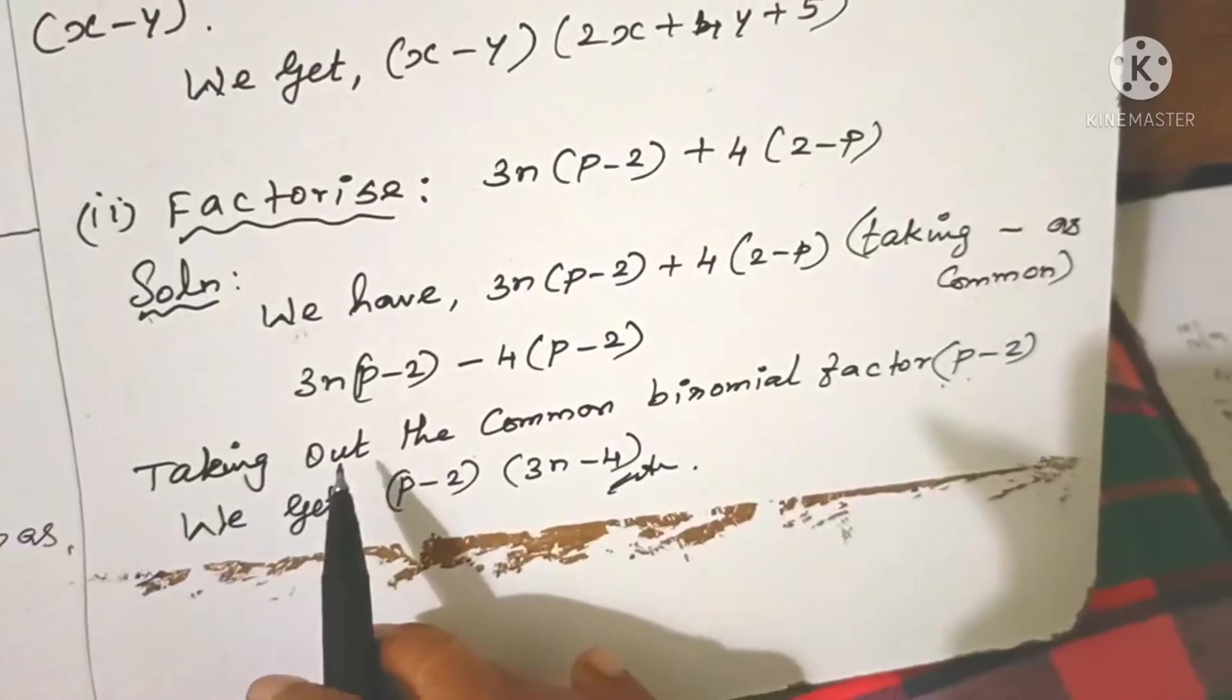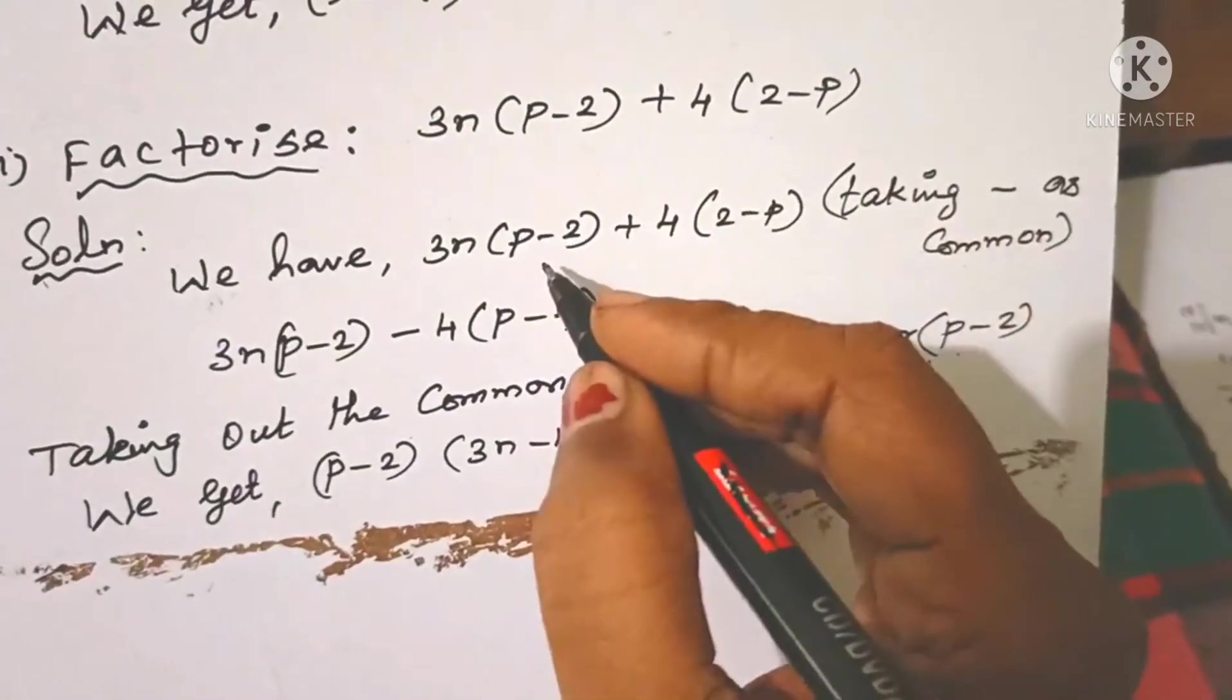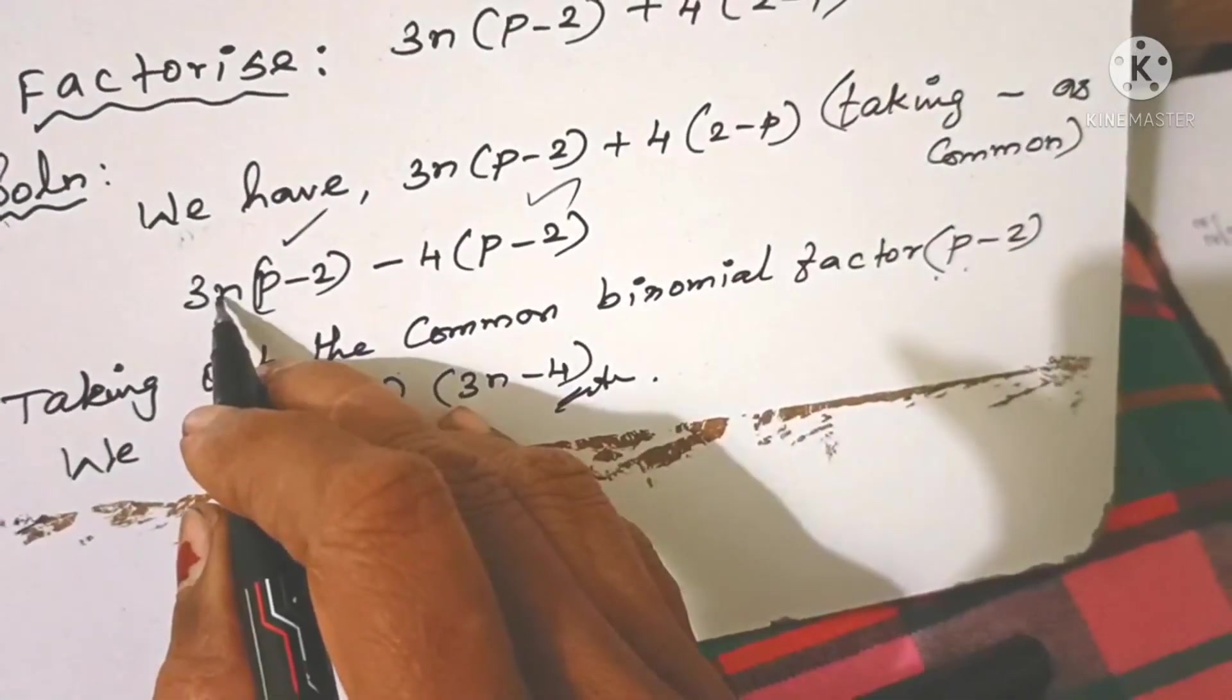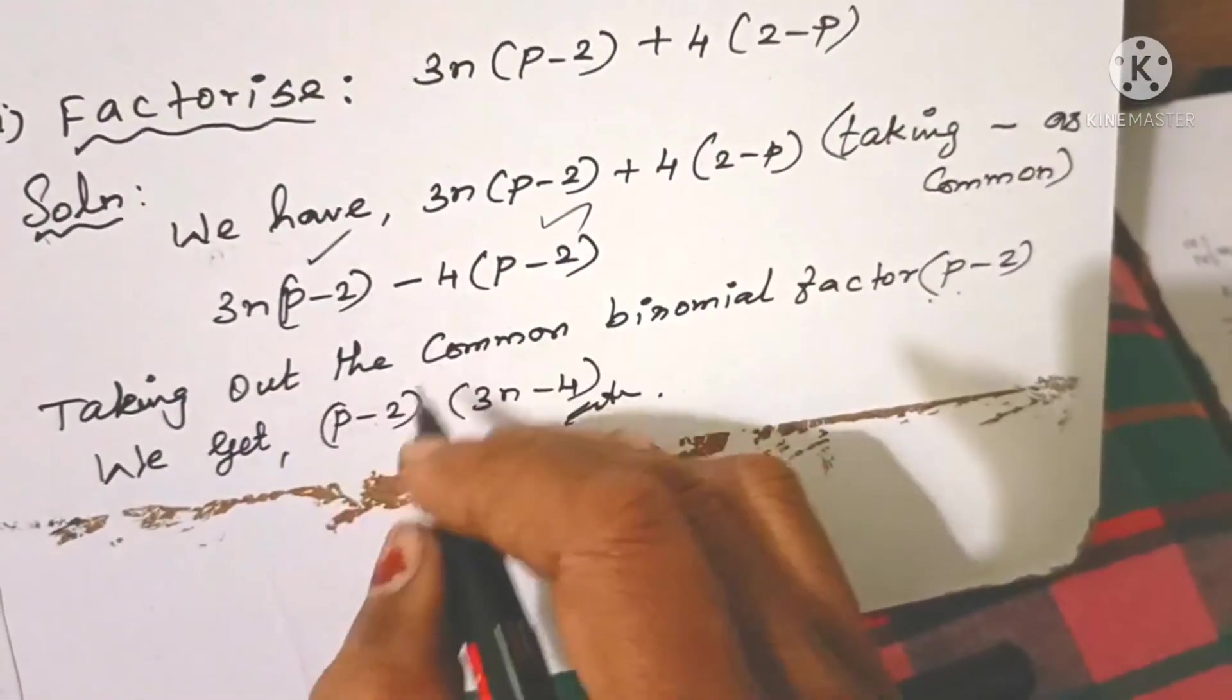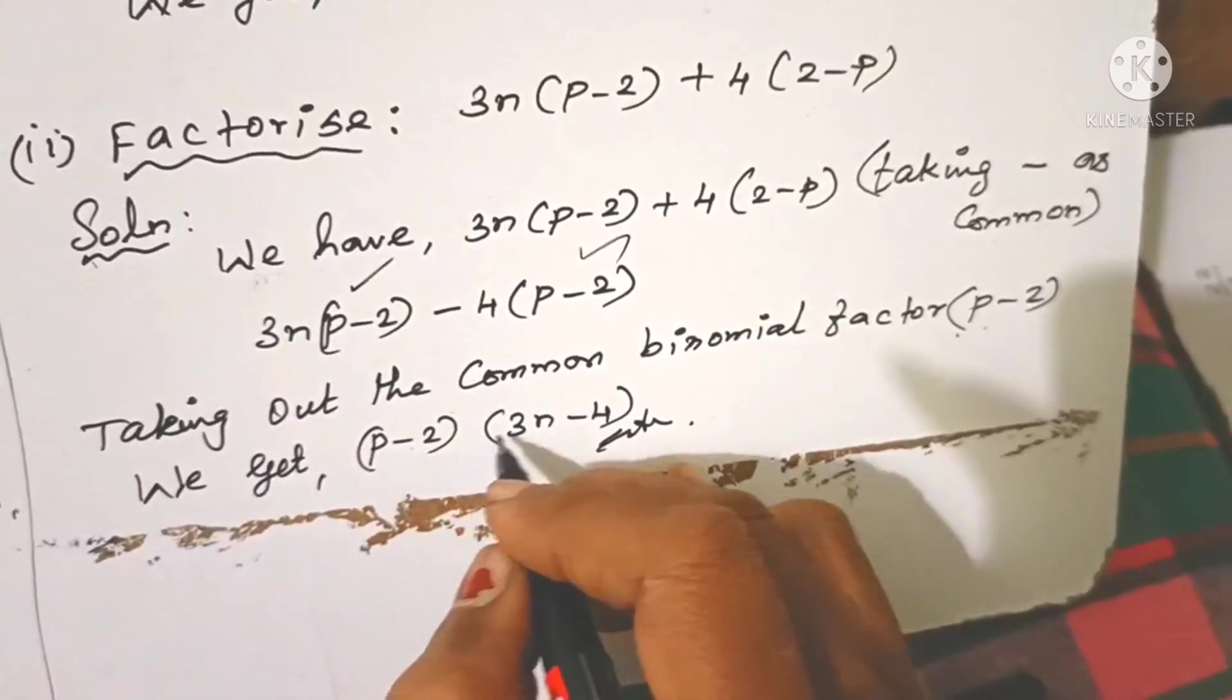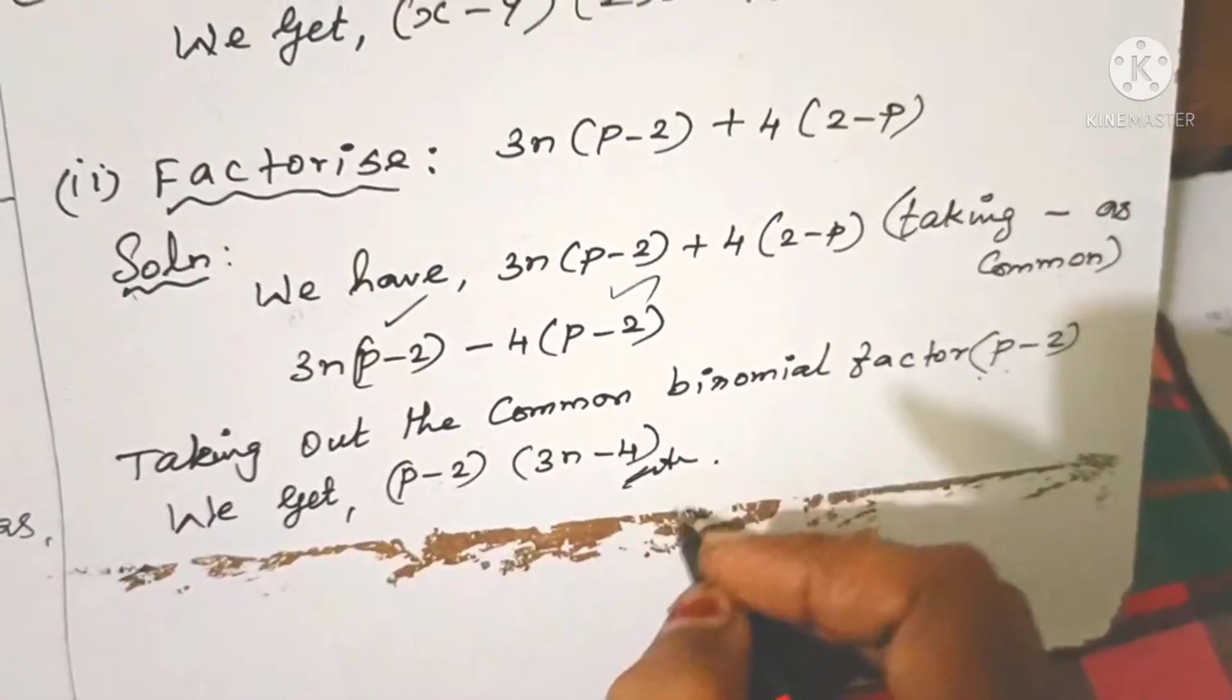So taking out the common binomial factor, here p-2 is common. So p-2 is common. The remainder part is 3n minus 4. So (p - 2)(3n - 4) is the answer.